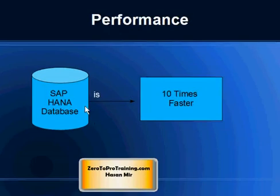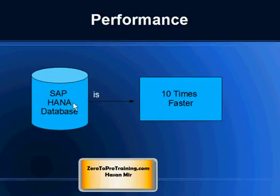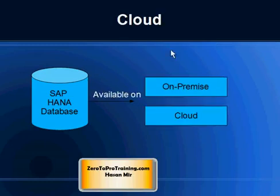The idea behind creating HANA database was to achieve faster performance. SAP claims it's 10 times faster than standard databases, and customers have reported five times better performance in certain scenarios. SAP HANA database is available on both on-premise and cloud versions, so you don't have to install anything on your premises — it's available readily on the cloud.